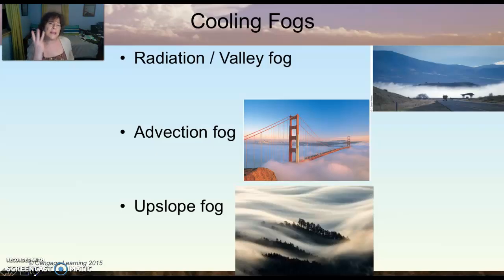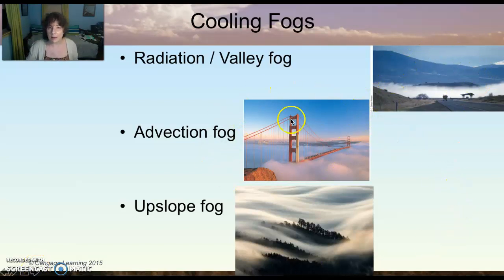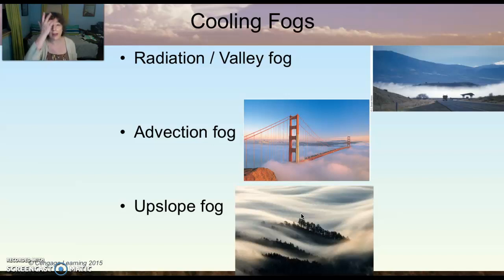There are three types of cooling fogs: there is a radiation or valley fog, there's an advection fog like you might see in San Francisco, and there are upslope fogs which you might see in the Great Smoky Mountains or in the Rocky Mountains, especially on the eastern side.